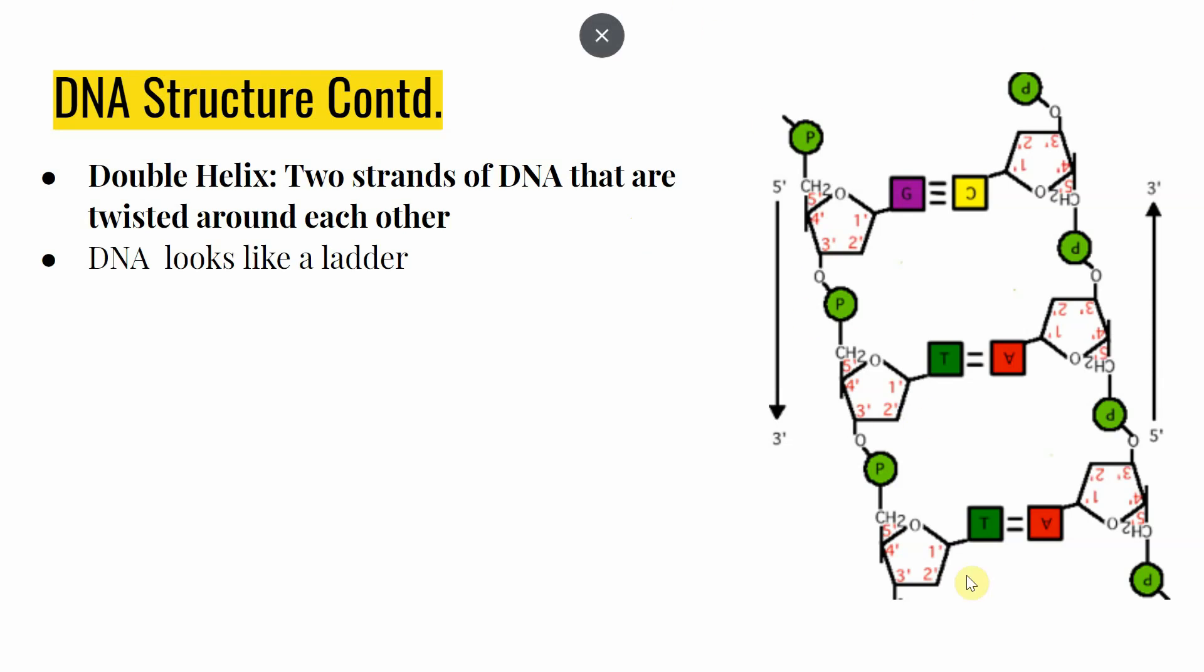One that is kind of easy to see hopefully in this picture is that if you were to untwist DNA and kind of have it all in one plane, DNA kind of looks like a ladder. And this is going to be a helpful analogy for us to think about how the parts of our DNA building blocks, our nucleotides, fit together. Because we remember our nucleotides are made up of three parts. We have our sugar, our phosphate, and our nitrogenous base. We're going to break down in just a second how they come together to form DNA.